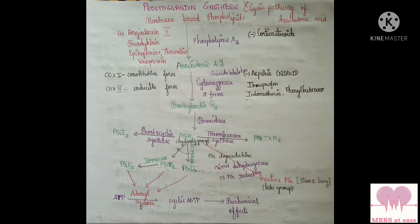The constitutive form produces prostaglandins that mediate gastric, renal, and platelet functions. The inducible form mediates the inflammatory response. Aspirin binds to cyclooxygenase irreversibly — it acetylates a serine residue in the active center of cyclooxygenase, inhibiting prostaglandin synthesis. In inflammation, other anti-inflammatory drugs like indomethacin and ibuprofen also cause irreversible inhibition, but paracetamol is a reversible inhibitor.